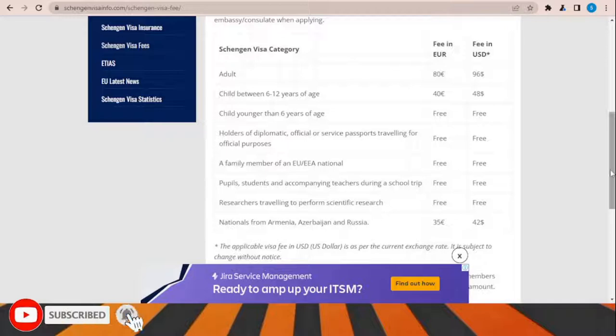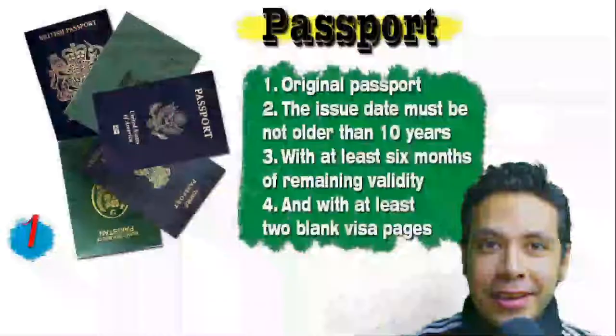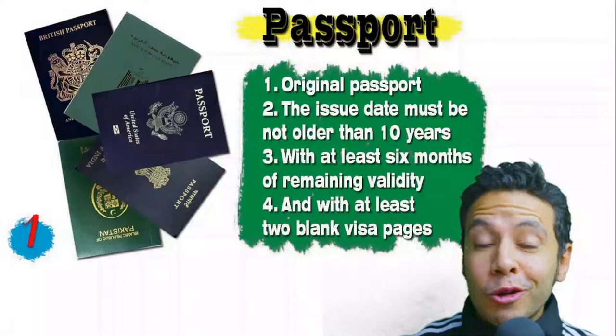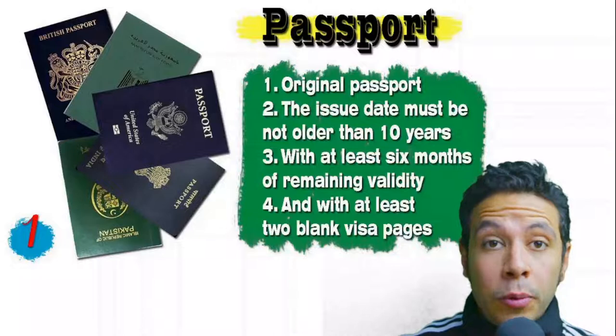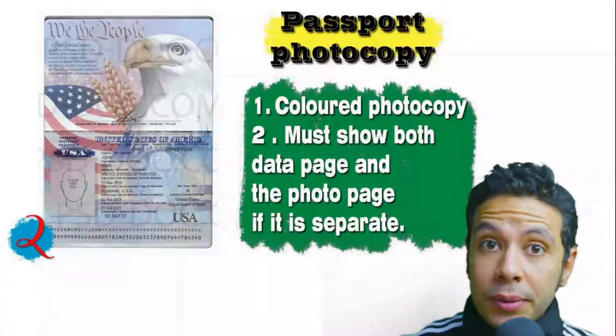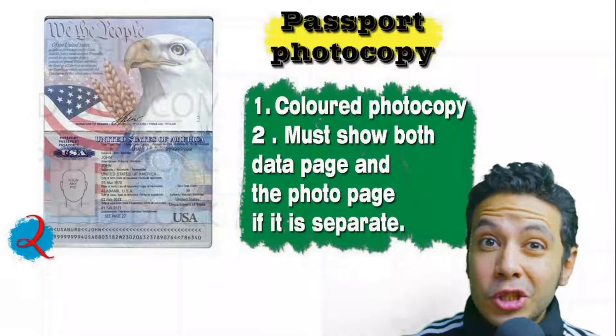For required documents: your passport must be original, not older than 10 years, with at least six months of remaining validity and at least two blank visa pages. In many cases you will also need a photocopy of your passport — preferably colored, showing both the data page and the photo page. Sometimes you may need to photocopy every page, but generally only the data and photo pages are needed.